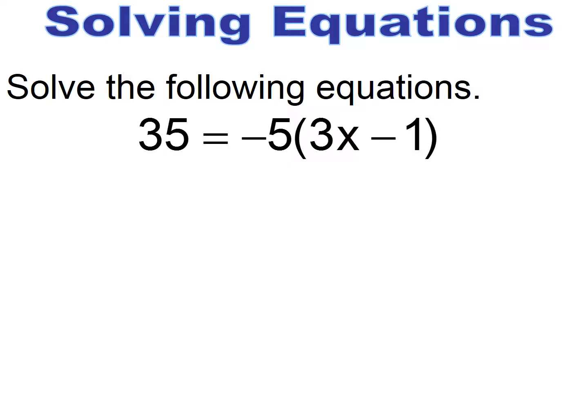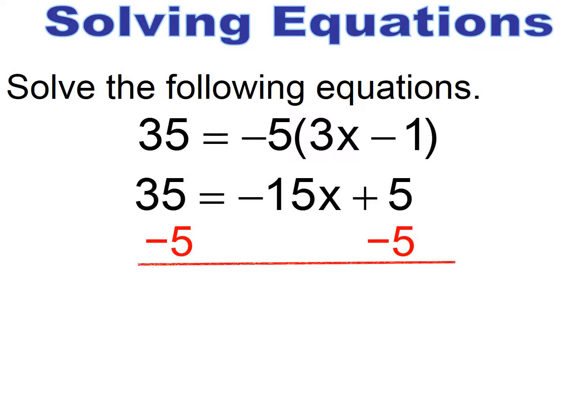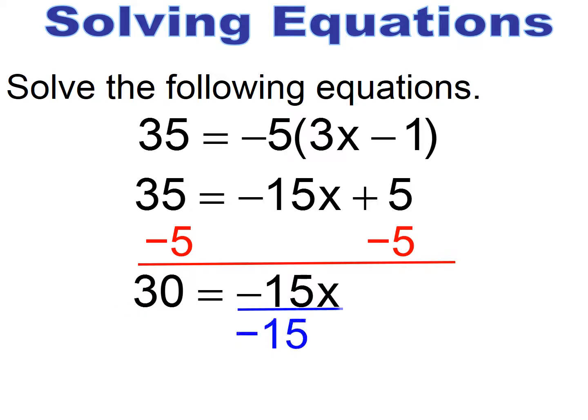Pause and try. Make sure you do the distributive property correctly. Negative 5 times positive 3 gives me negative 15x. Negative times minus 1 gives me plus 5x. Now I do the two-step equation: subtract 5 from both sides, then divide both sides by negative 15, and I get x equals negative 2.